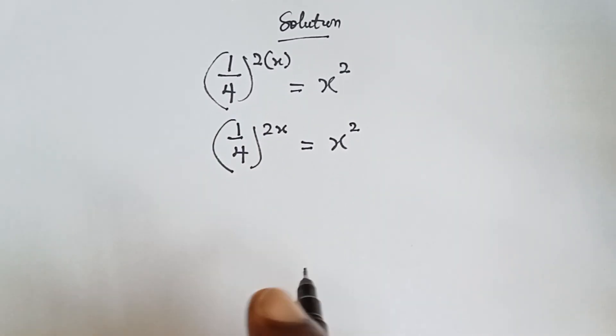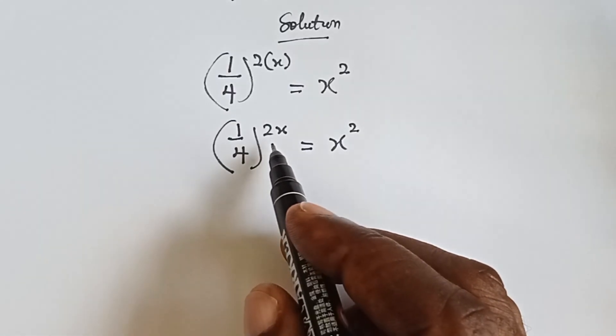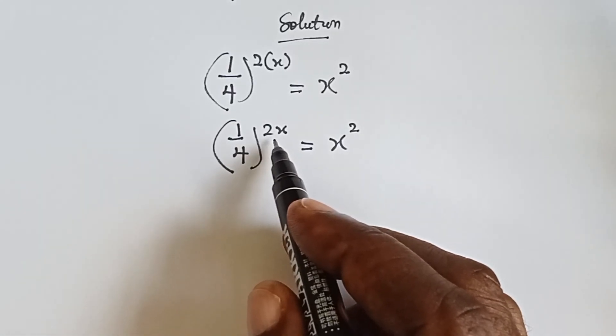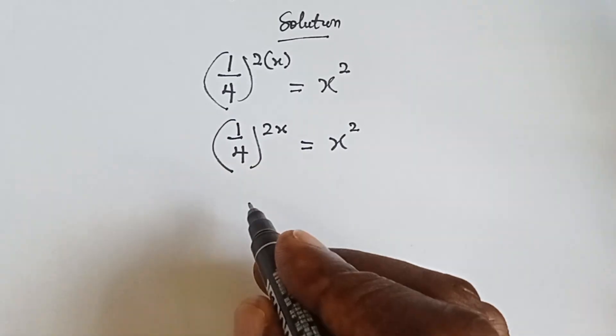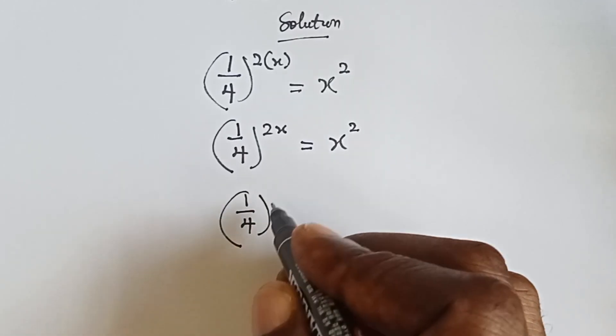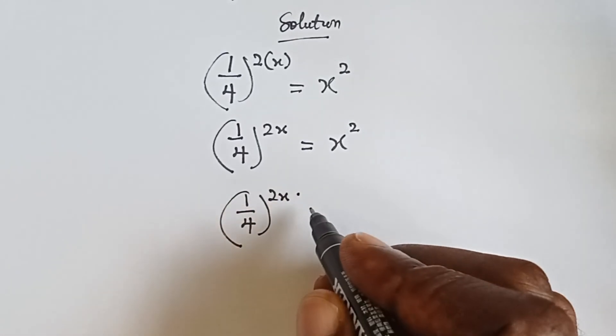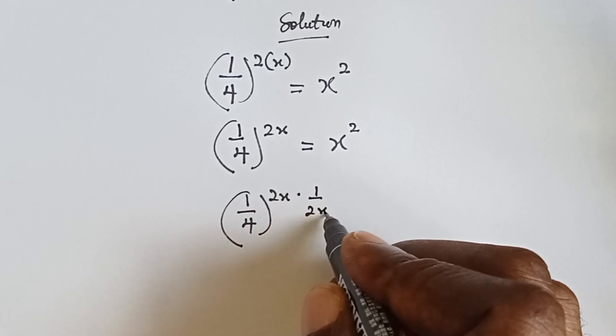Alright, so we can multiply both sides by the reciprocal of this power 2x. So it means that when we have 1 over 4 raised to power 2x, you can multiply it by 1 over 2x.